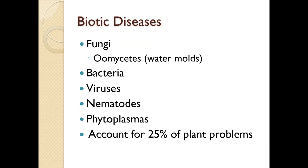We have fungi and then we have oomycetes — as we remember, oomycetes are actually not a fungus, though they are closely associated with fungal diseases. Also included are bacteria, viruses, nematodes, and phytoplasma. This accounts for about 25% of plant problems, and about 85% of those are fungi. So chances are if a problem is biotic, it may be a fungus.